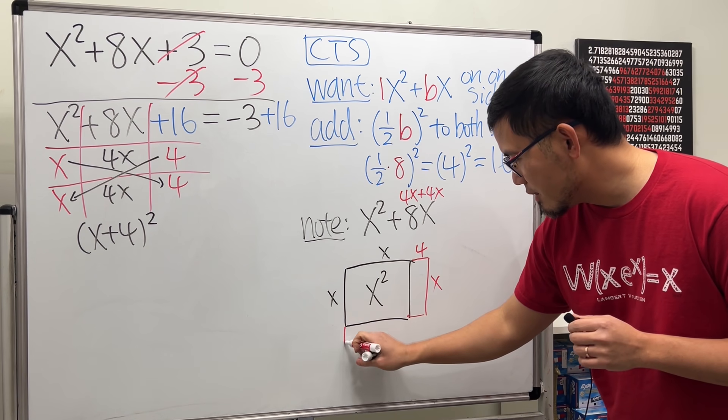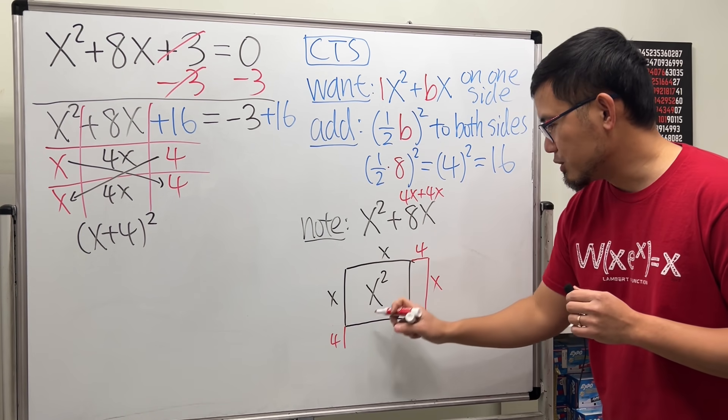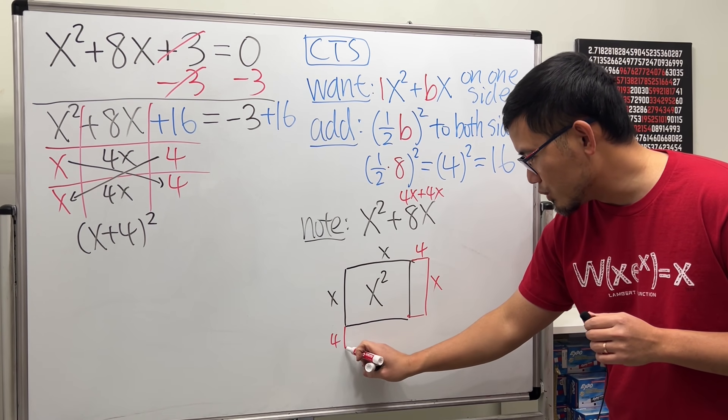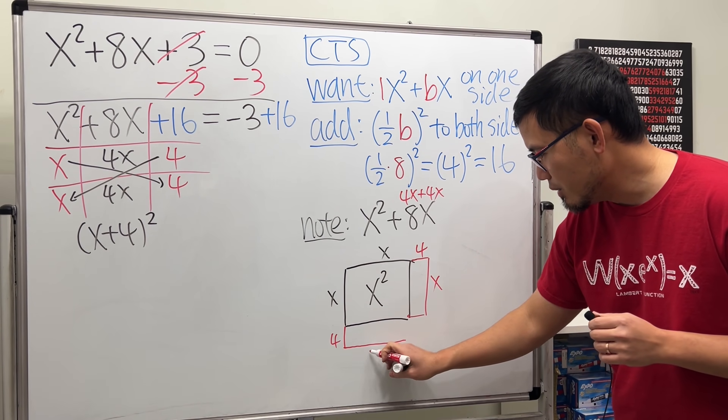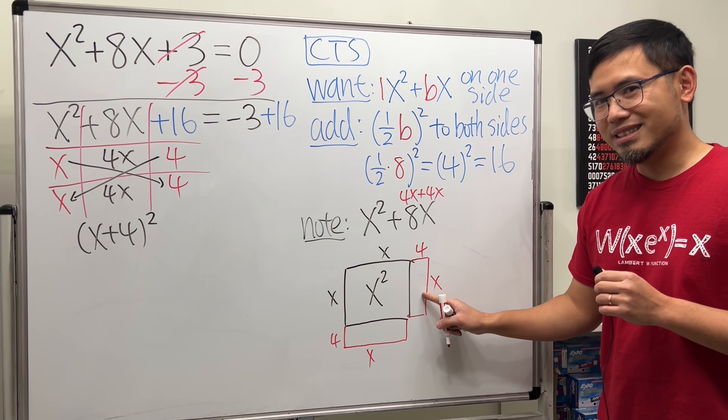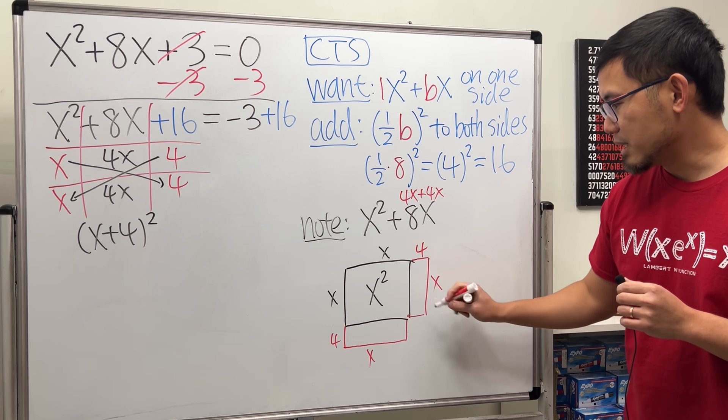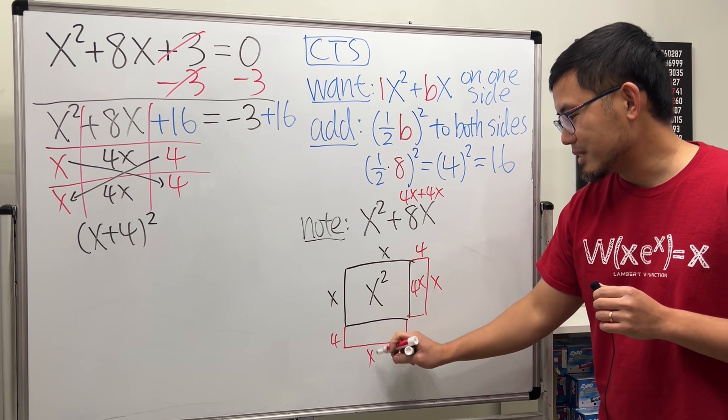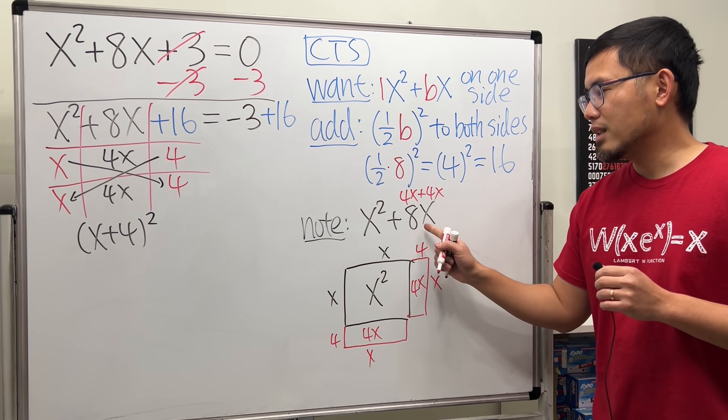But this is 8x which we should have 4x plus 4x. Don't worry I will just put a 4 down right here and I say this much is 4, that much is 4, and then of course this is x. We can draw the x right here as well. Now what's the area of this rectangle? It's just 4 times x which is 4x. Likewise this area is just 4 times x which is 4x. Together we do end up with 8x.